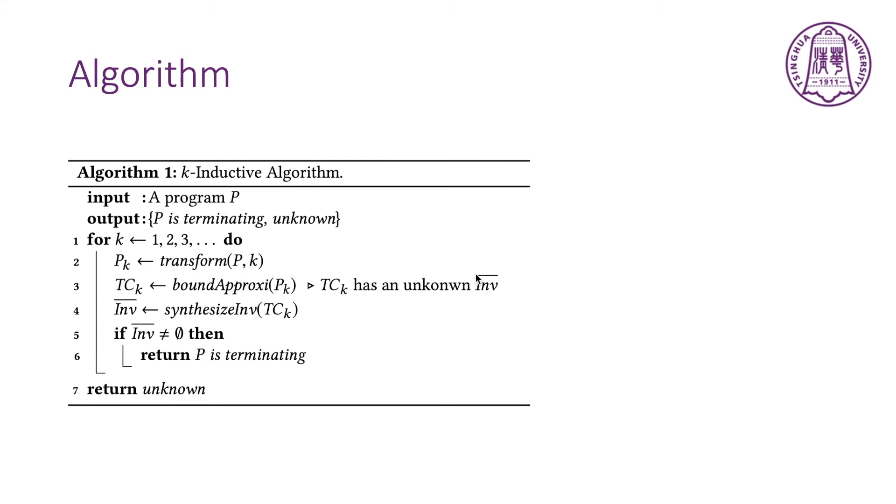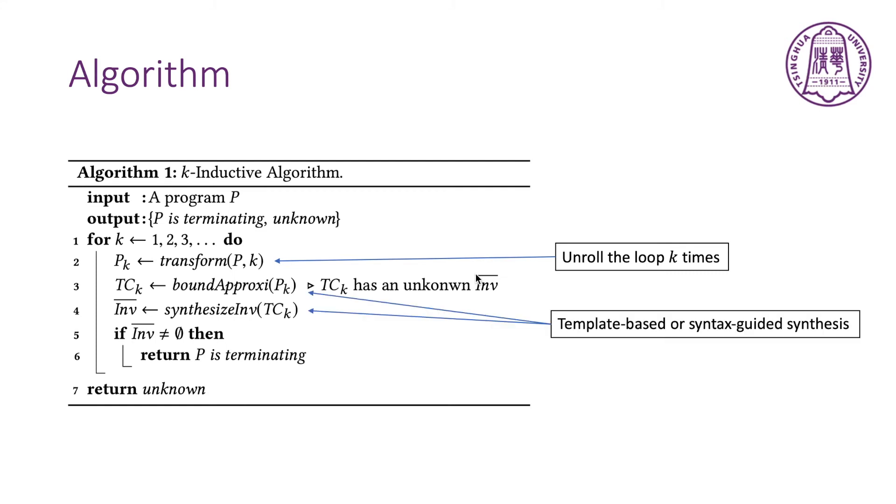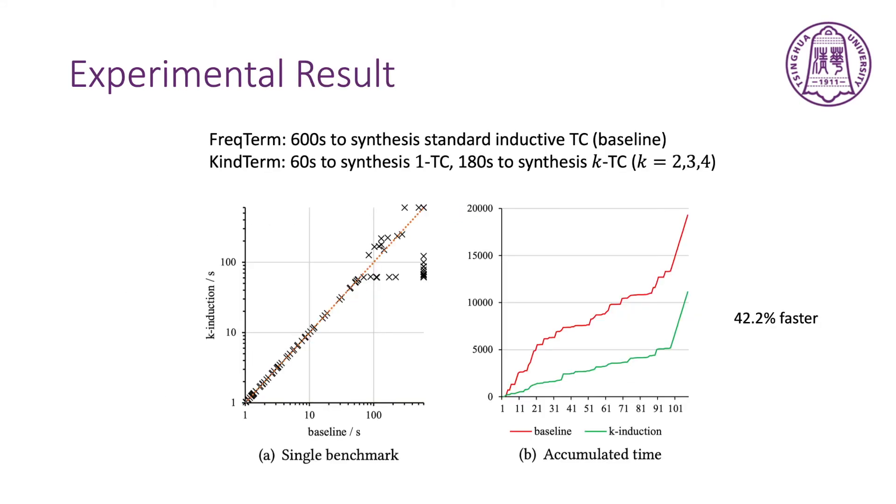The algorithm of our approach is natural. Given an input program, we first perform a program transform to unroll the loop K times. Next, we can use the template-based method to instantiate the K-inductive TC, and then try to synthesize a K-inductive environment by SMT solving. If the synthesis succeeds, the termination of the input program is proved. Otherwise, we increase K and repeat these steps until the time limit is reached.